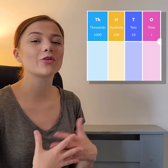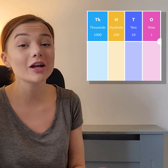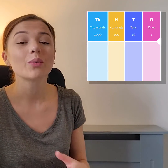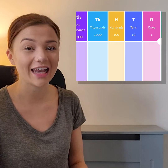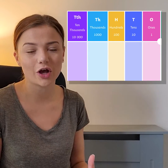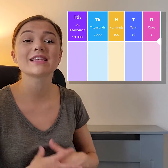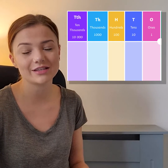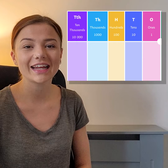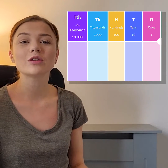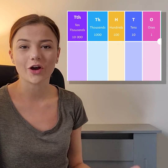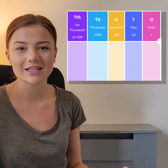When we are ordering numbers up to 100,000, we also need to look to a new column to the left. This is the ten thousands column. It tells us how many ten thousands there are in a given number. Here is the number 45,000 on a place value chart.